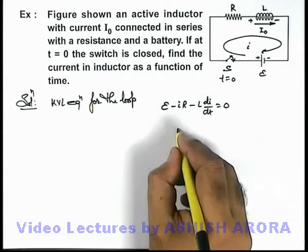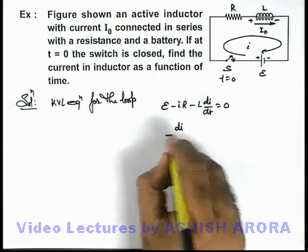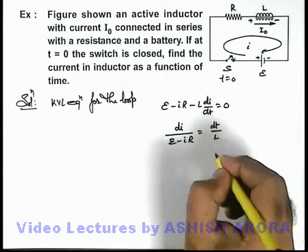So in this situation we can rearrange it as: di by dt is E minus iR by L, so it is di by E minus iR is equal to dt by L.